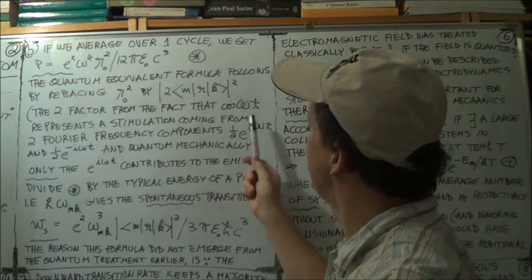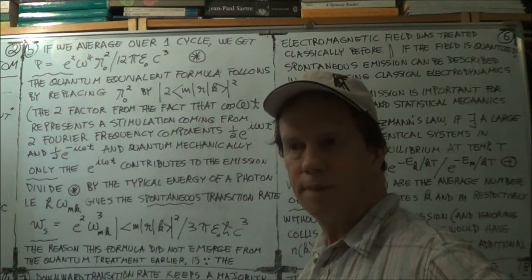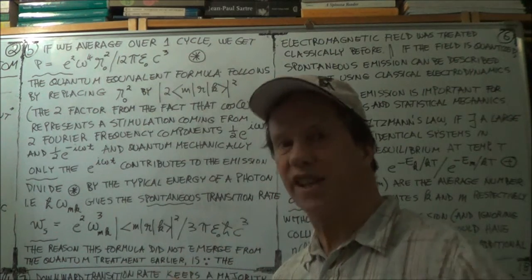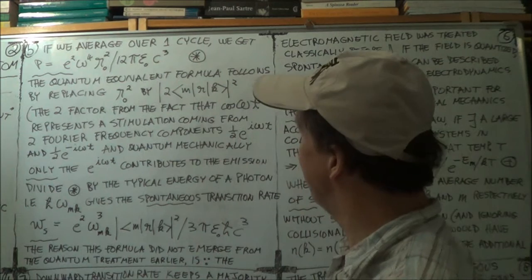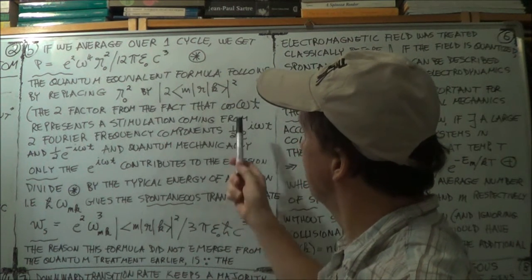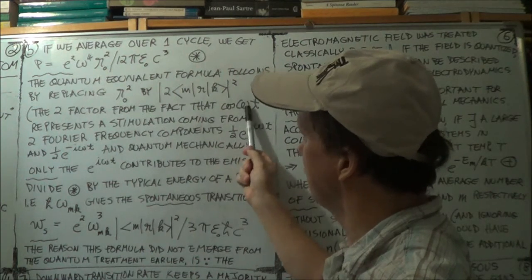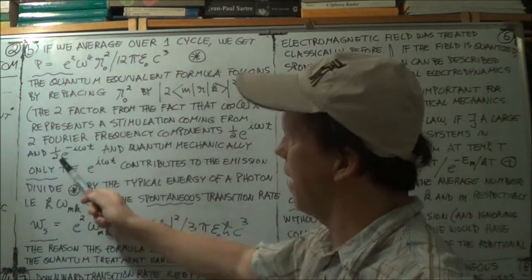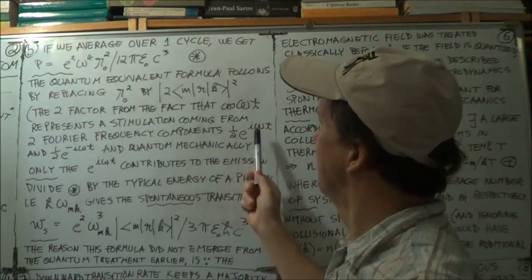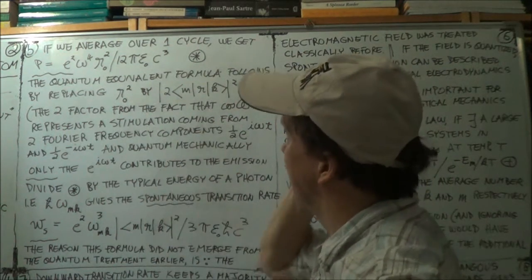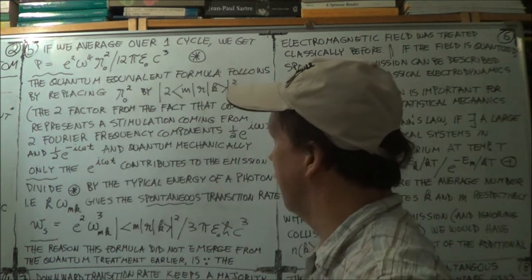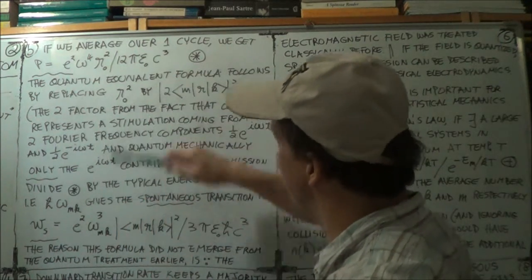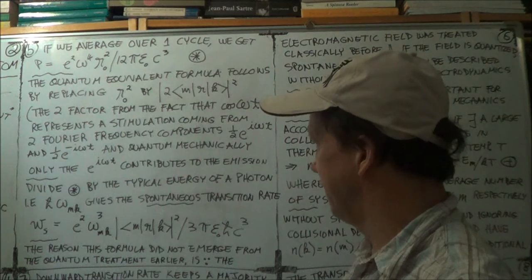The cosine term, you can express, if you know some complex number theory, you know that cosine can be written as the sum of two exponential terms, e to the i something or other. And so the fact that this cosine can be written as an e to the plus i omega t term and a e to the minus i omega t term, you'll get the two results from this fact. So you get this two here.